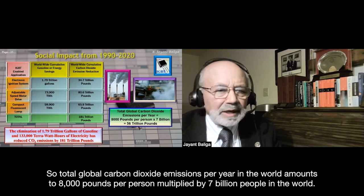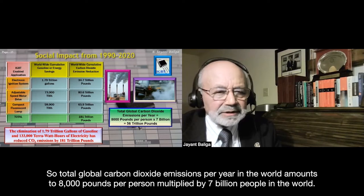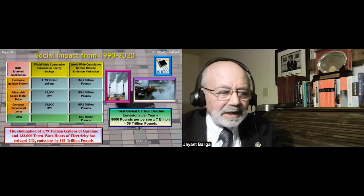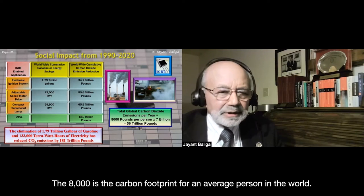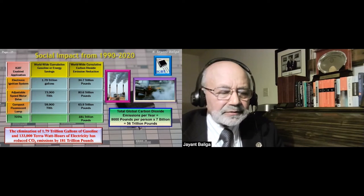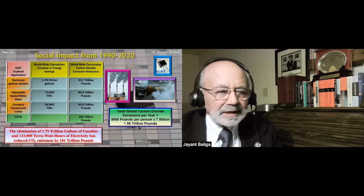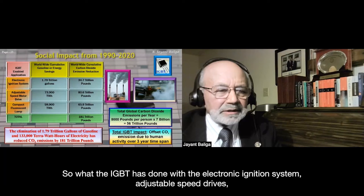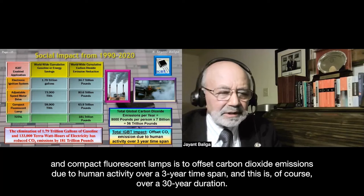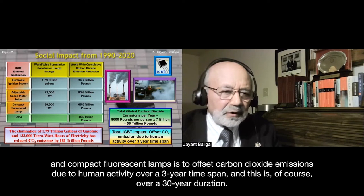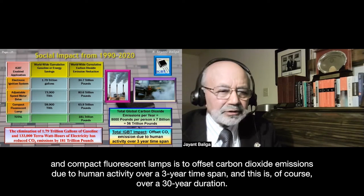To put this in context: total global CO2 emissions per year amount to 8,000 pounds per person multiplied by 7 billion people — that's 56 trillion pounds per year, meaning human activity produces 56 trillion pounds of CO2 annually. What the IGBT has done with electronic ignition, adjustable speed drives, and compact fluorescent lamps is offset the equivalent of about three years of global CO2 emissions due to human activity, over a 30-year duration.